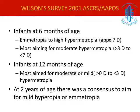A Wilson survey carried out in 2001 among ASCRS and AAPOS members also suggested that for children more than two years, you can aim for emmetropia or very minimal hypermetropia.